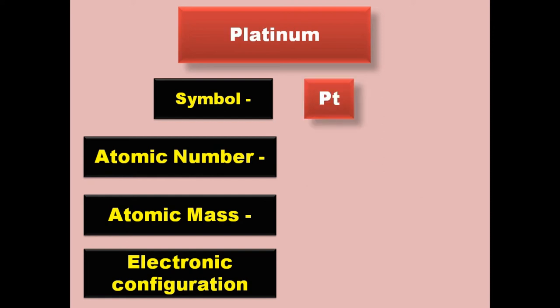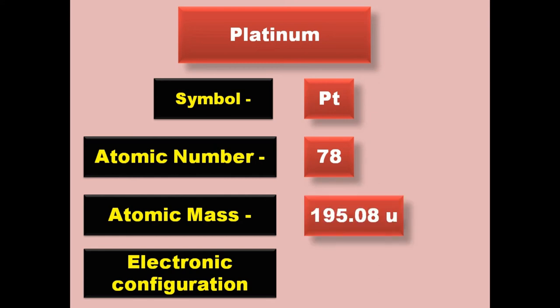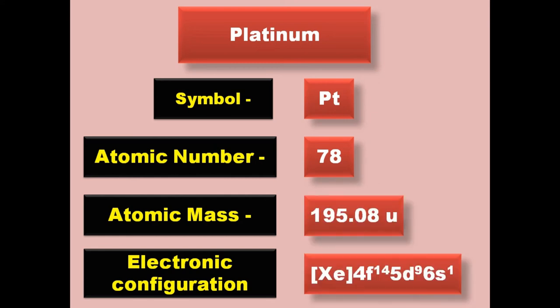Platinum has symbol Pt, atomic number 78, atomic mass 195.08, electronic configuration [Xe] 4f14 5d9 6s1. Platinum is a transition metal and exists in solid form at room temperature.